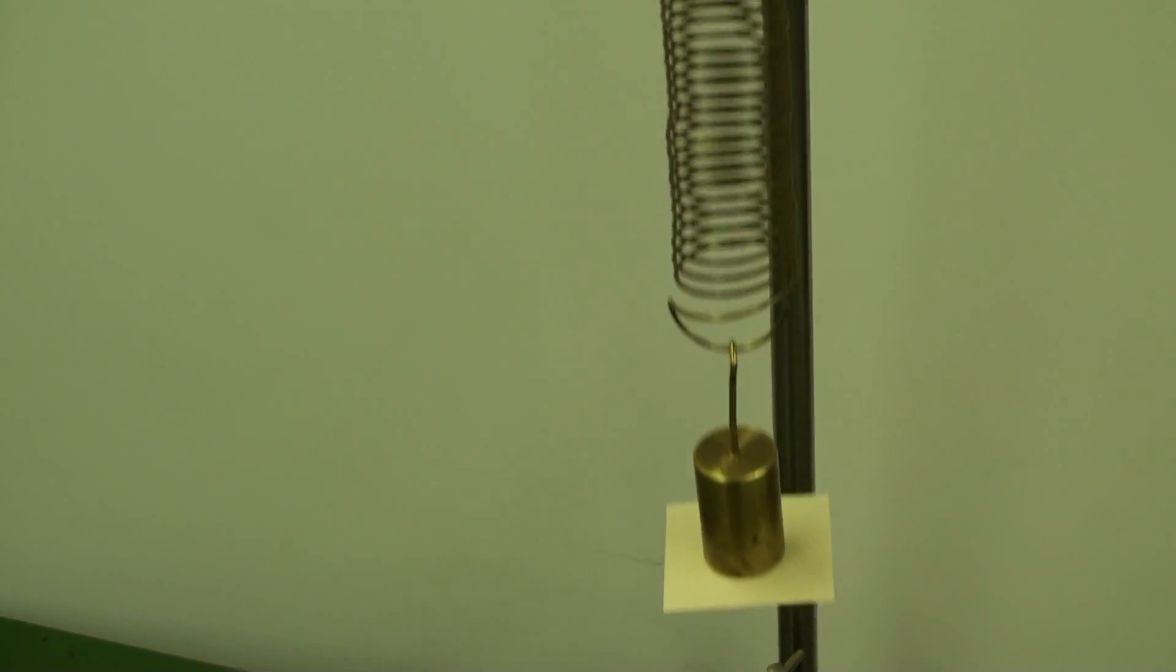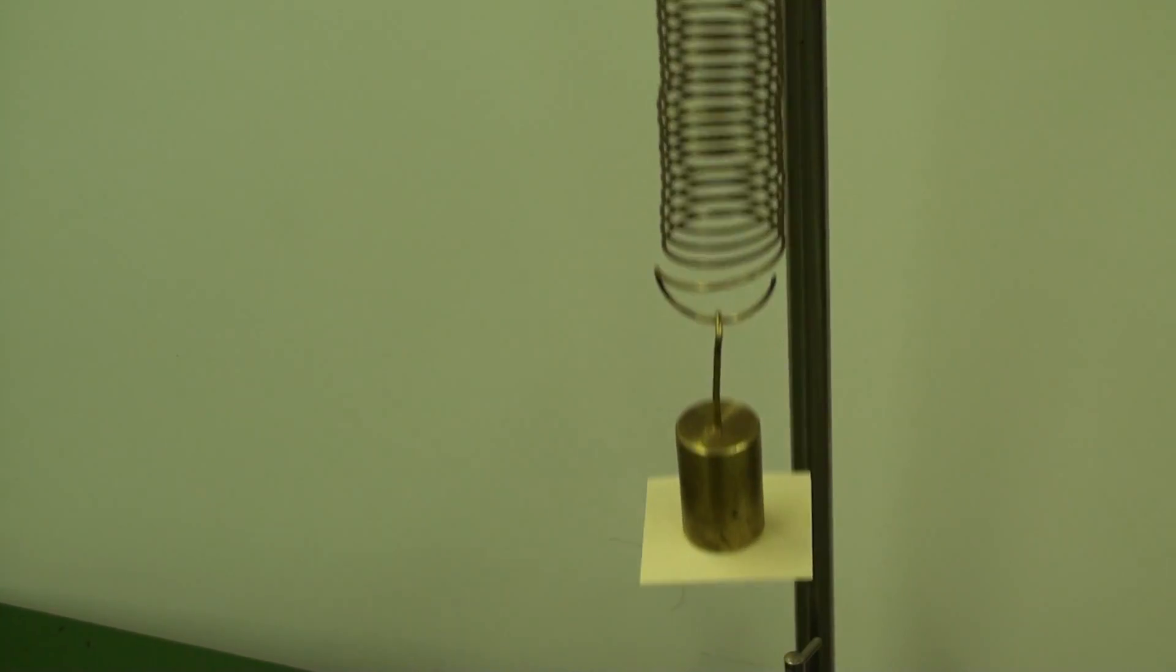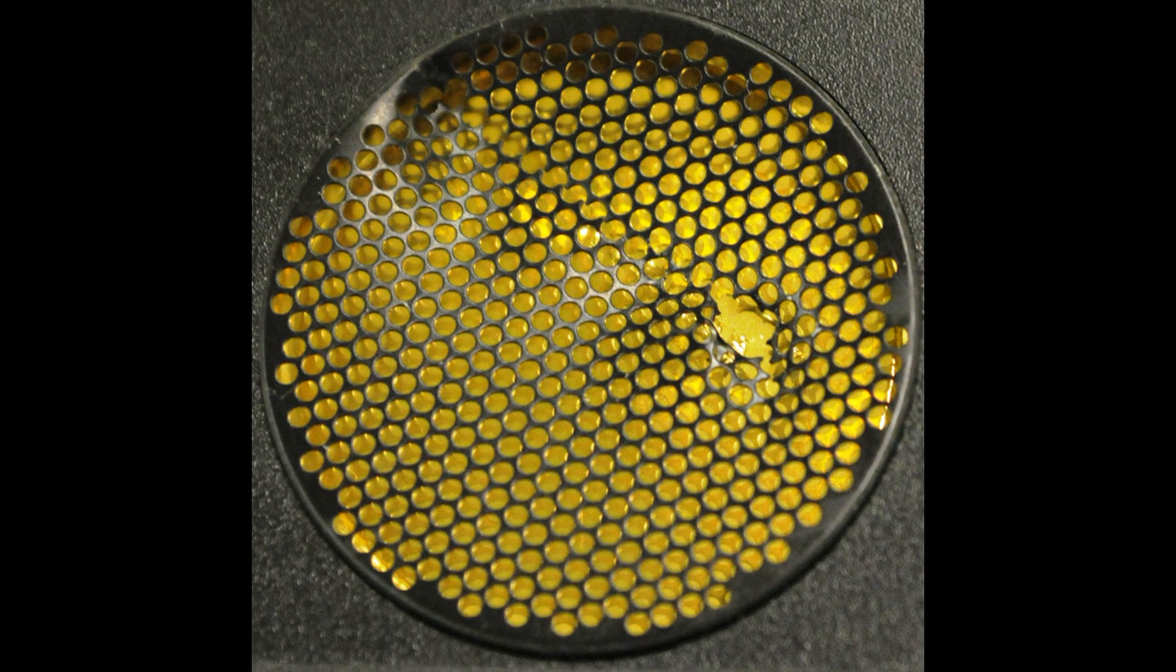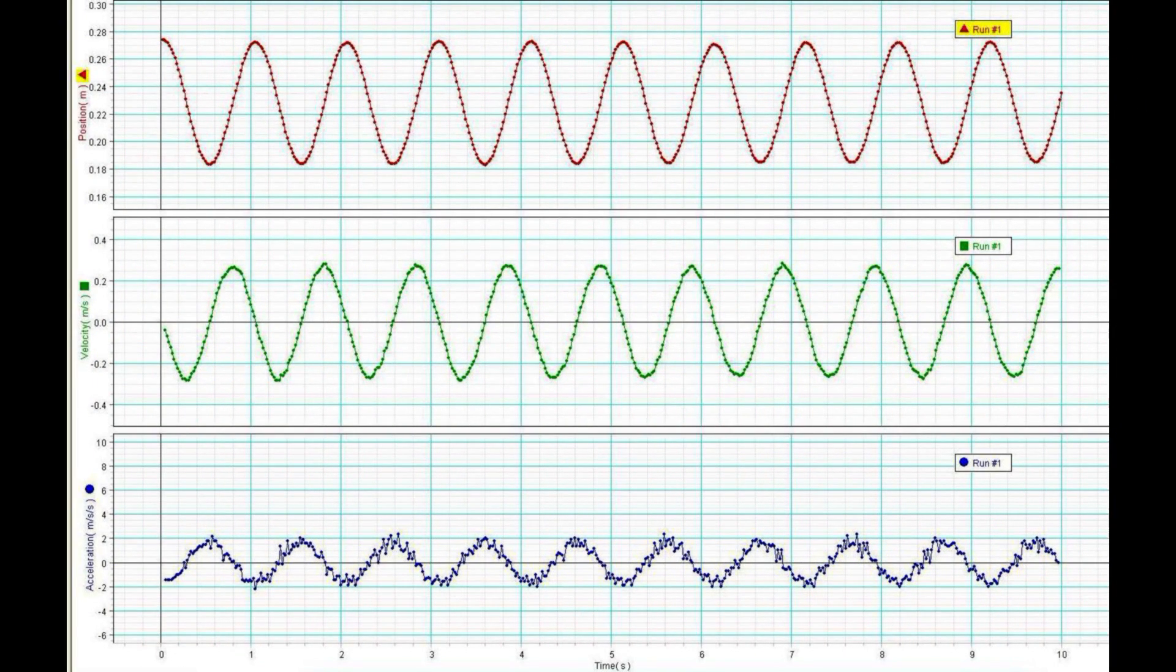Please cover the motion sensor with a protective wire mesh, and don't overdo the amplitude of the oscillation. This damage and worse can happen to an unprotected motion sensor. All three graphs can be viewed simultaneously.